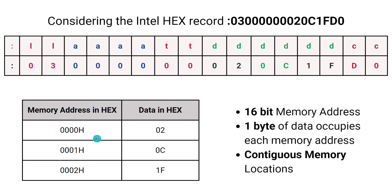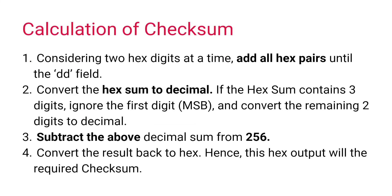Now, talking about the calculation of the checksum: the entire record is made up of hexadecimal digits and each field is represented by at least two hexadecimal digits. The first step is to divide the entire hex record into hexadecimal pairs and add each pair up to the data field. The second step is to convert the resulting hex sum to decimal. For example, if the hex sum obtained is 49C — three digits — we ignore the first digit (the MSB), so only the remaining two digits are used for the decimal conversion.